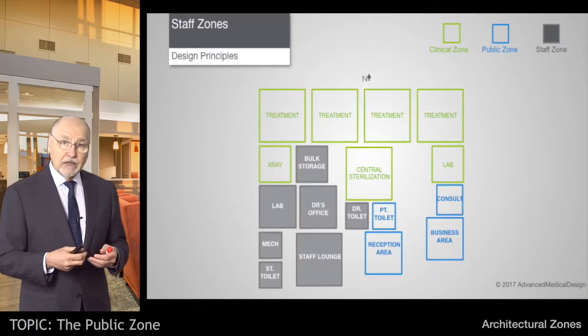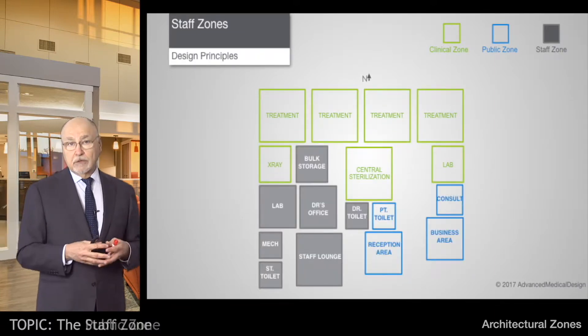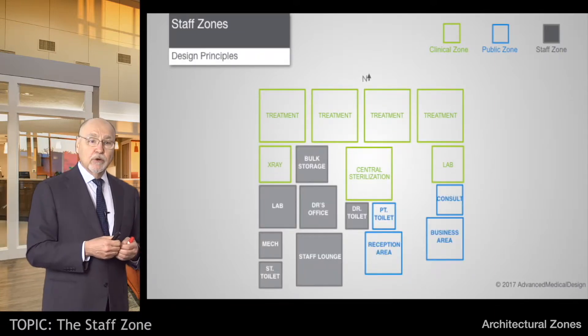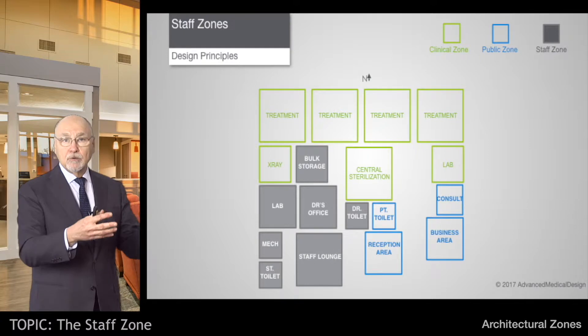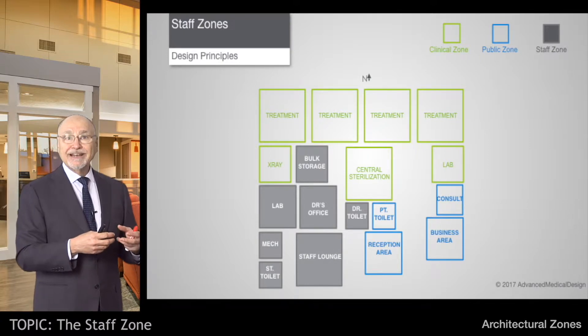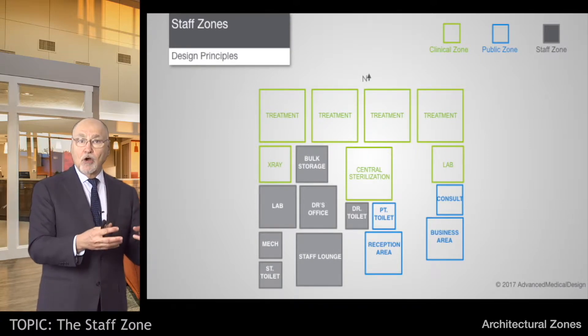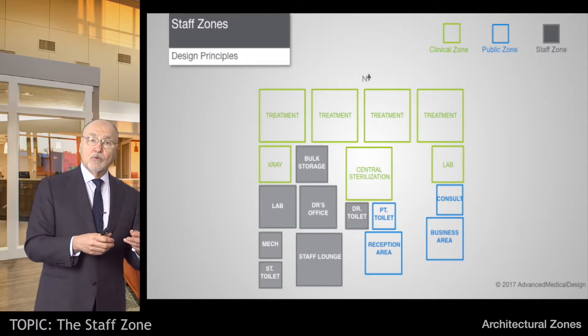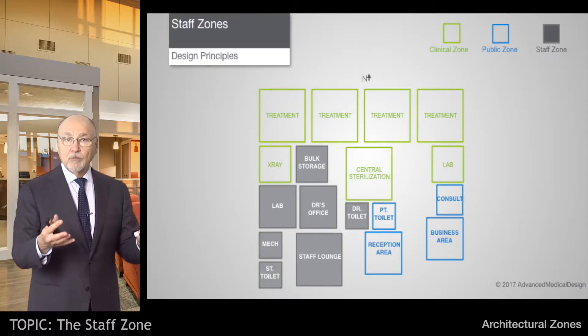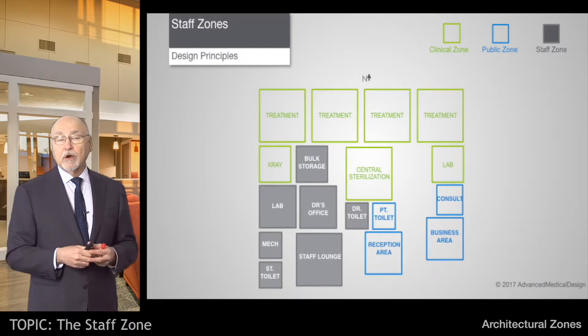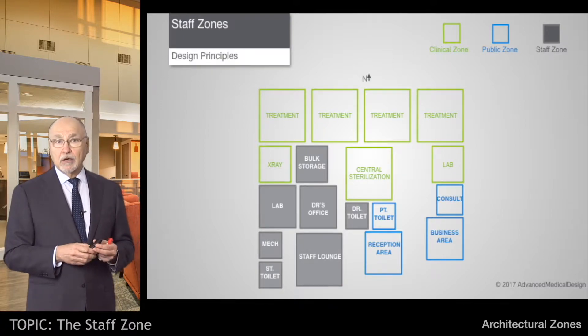Then finally we have the staff zone. Bulk storage is probably one of the most commonly missing areas in an office, and so we're going to be talking about what the dimensional requirements of that are.